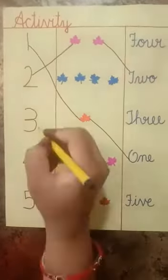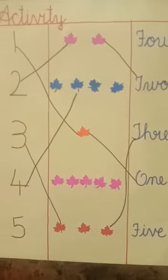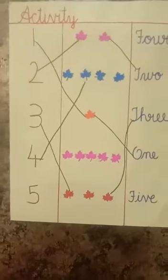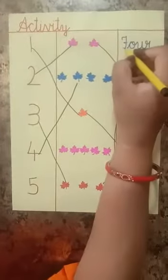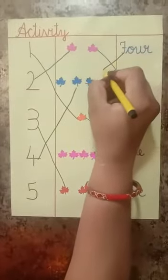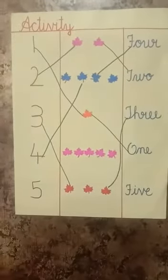Now which number is this? 4 number. So where is the 4 leaves? 1, 2 — no. 1, 2, 3, 4 — yes. These all are 4 leaves. So match this 4 number with 4 leaves. Okay? Now what is the spelling of 4? F O U R 4. So this is the spelling of 4. You match this spelling with all the blue leaves. Okay?